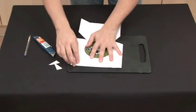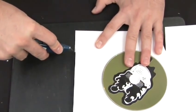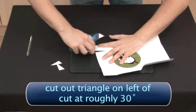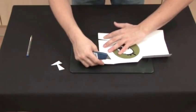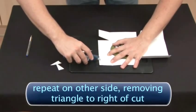Fold out the bottom flap and cut along the fold that runs to the card's short edge until you reach the fold that bisects it. Cut out a triangle on the left of this cut at roughly 30 degrees. Repeat this on the other side, removing the triangle to the right of the cut.